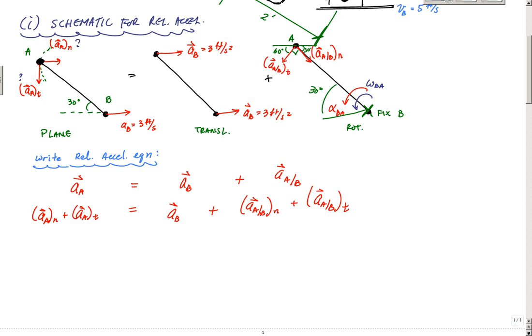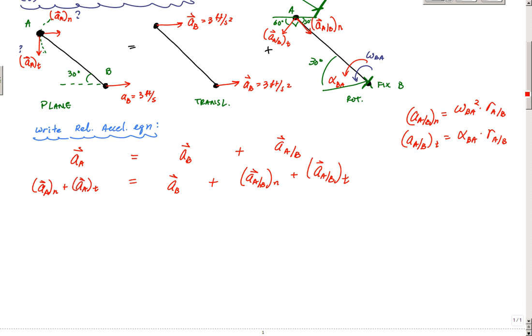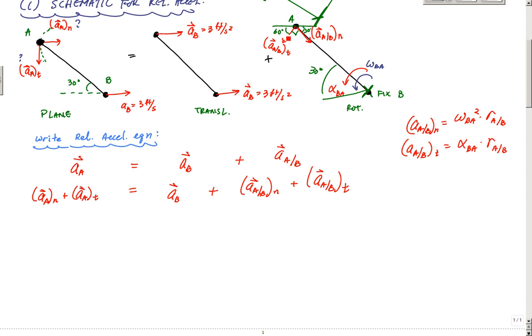I know that AABN, the magnitude of the normal component, is omega BA squared times the distance RAB. And AABT, the tangential component, is defined as alpha BA times RAB. These are the magnitudes of the normal and tangential relative acceleration of A with respect to B.